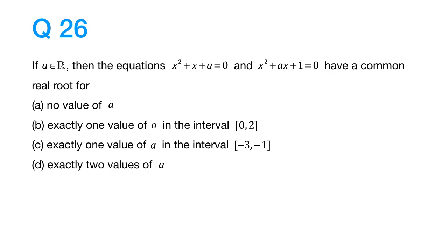How do we do this question? Well, the first step would be to write down the two given equations. Now, if A is equal to 1, then the equations become x squared plus x plus 1 equals 0.